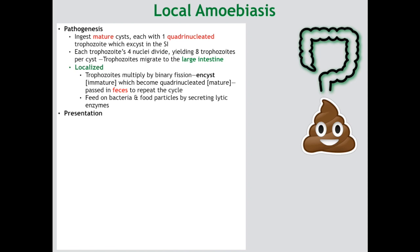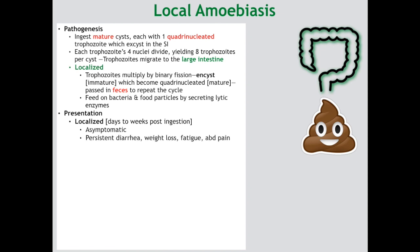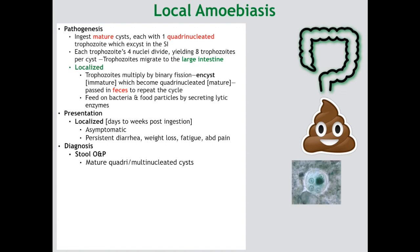The clinical presentation ranges from asymptomatic carriers simply passing mature cysts in their stools, to people presenting with mild disease — consisting of persistent diarrhea, possible weight loss, fatigue, and mild abdominal pain. The presentation typically takes a few weeks after ingestion. Diagnosis will always be on stool O&P, where you will observe quadri- or multinucleated round cysts. Trophozoites are possible but won't last long in the sample, and always remember to take multiple samples.